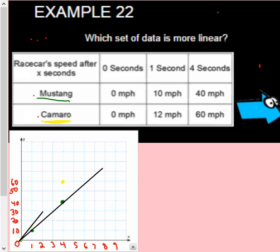Let's try now with the yellow. Oh, no, that one's off. It's too high. So we know the data set that is more linear is the Mustang.